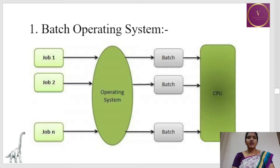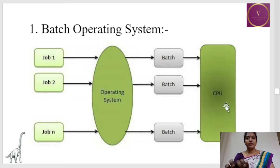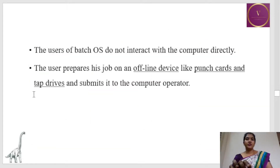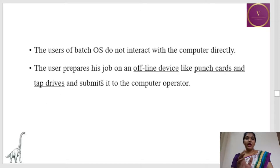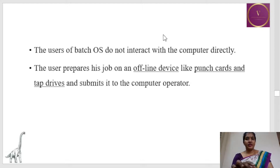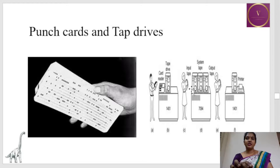In a batch operating system, different jobs are submitted to the operating system, the OS groups the jobs into batches, and sends them to the CPU. The user of a batch OS does not interact directly with the computer — he prepares his job (the program) and submits it to the operator. The operator collects a similar set of jobs, creates a batch, and sends it to the computer. The programmer prepares his program offline on a device like a punch card or tape drive.